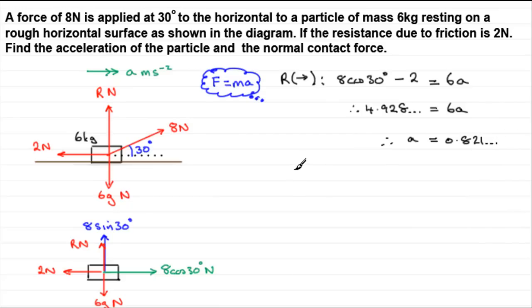So in other words, we have got that the acceleration, let's just mark it in. The acceleration, which I defined as A equals 0.8 meters per second per second to, let's say, 1 decimal place, 1dp. Well, we've got the acceleration.